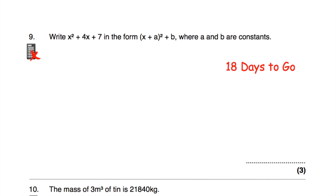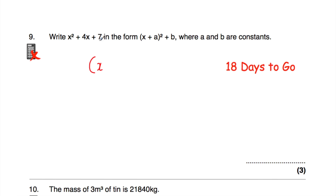Question number nine is on completing the square. We've got a quadratic and we want to complete the square. Open up the brackets, write x, then half the coefficient of x and put it inside the bracket, then square the bracket. Take away whatever that number inside the bracket is squared, then add your constant (plus 7) on the end and simplify.